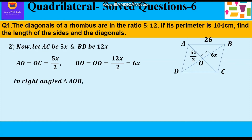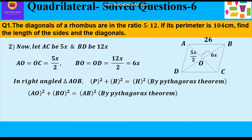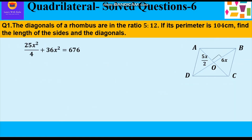Diagonals in a rhombus bisect each other at right angles, so they form four right angle triangles. In right angle triangle AOB, we apply the Pythagorean theorem: perpendicular squared plus base squared equals hypotenuse squared. AB is the hypotenuse, as it is opposite the right angle. So we write: AO² + BO² = AB². Substituting values: (5x/2)² + (6x)² = 26².